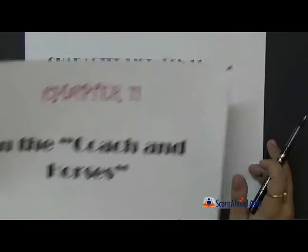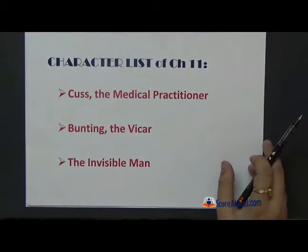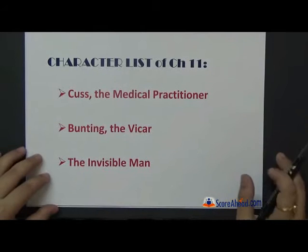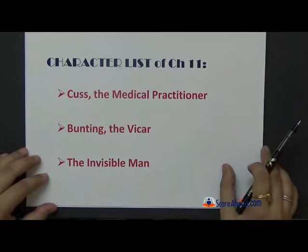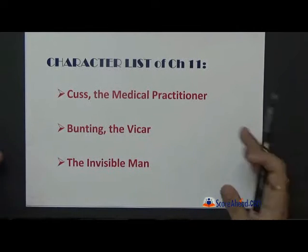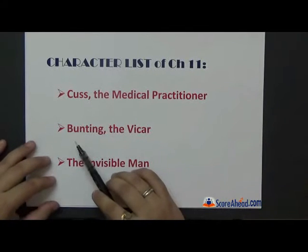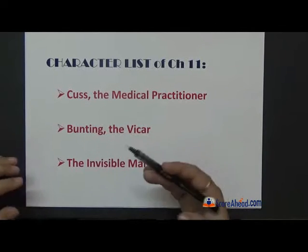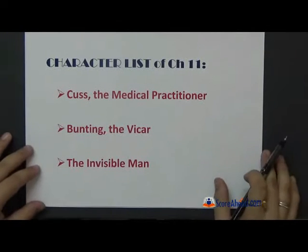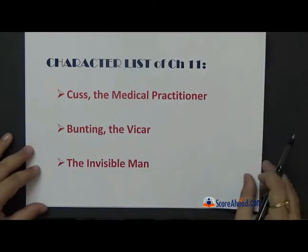And what happens? We have to see. Before that we have a list of characters: Kuss, the medical practitioner - you remember him, of course we have done a complete chapter on him. Bunting, the vicar - we have already heard about Bunting. We have done a chapter on him and the invisible man.